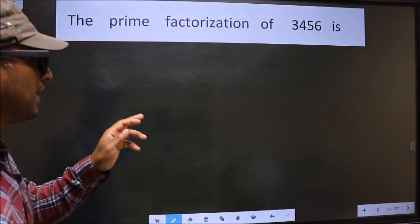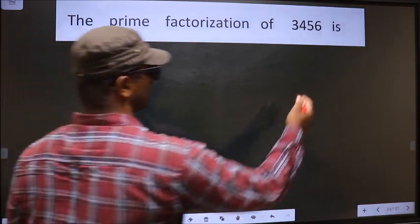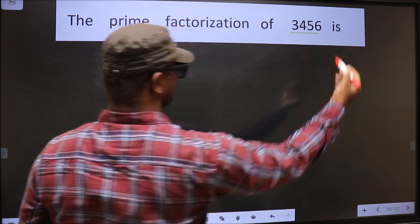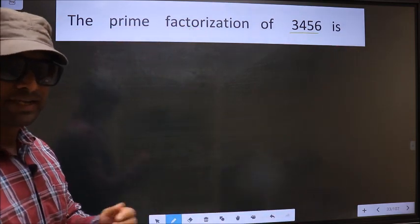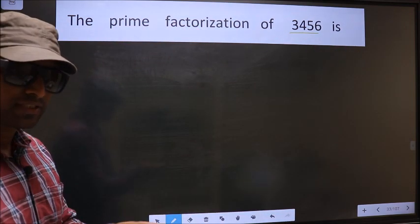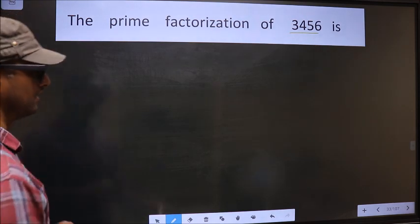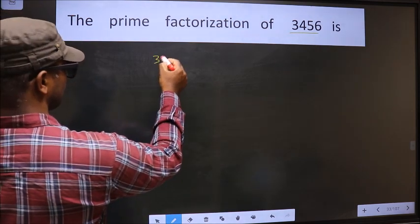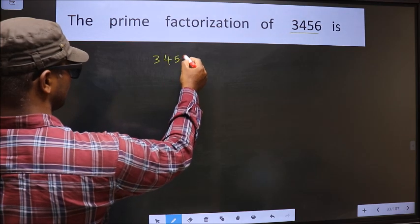The prime factorization of 3,4,5,6 is — to do the prime factorization, first we should frame it in this way: 3, 4, 5, 6.